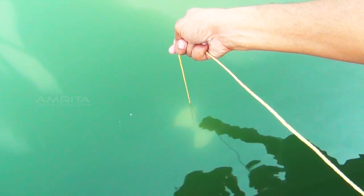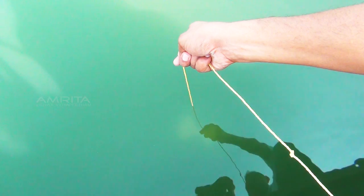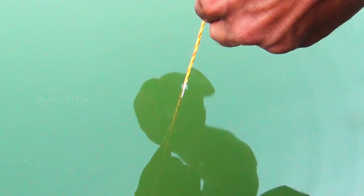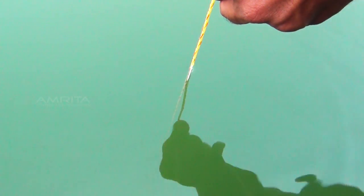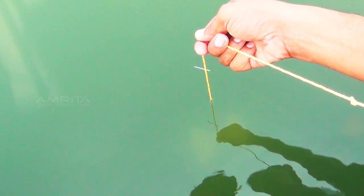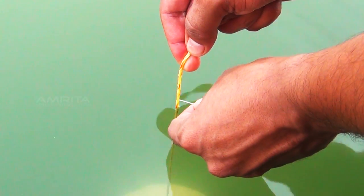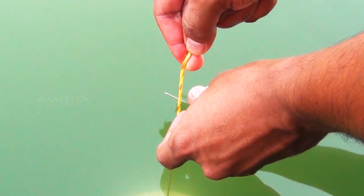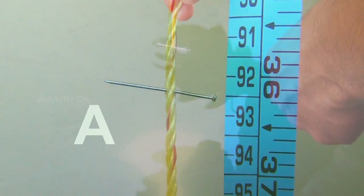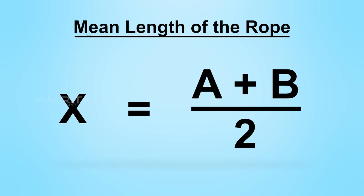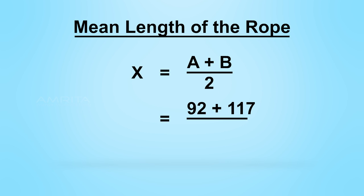On reaching a particular depth, the disk becomes completely invisible. Using a pin, mark the length of the rope when the disk disappears, say a centimeters. Slowly pull up the disk till the black and white segments just reappear. Using a pin, mark the length of the rope where they just reappear, say b centimeters. Using a meter tape, find the length of a and b. Find the mean length, say x centimeters, of the rope by the following method: x equals a plus b by 2.